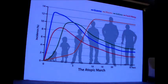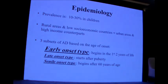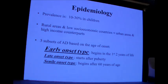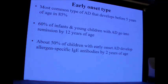This is an illustration of the atopic march. Atopic dermatitis is prevalent in 10–20% of children, usually affecting urban areas and high socioeconomic levels more than rural areas. There are three subsets of atopic dermatitis based on age of onset: the early onset type which begins during the first two years of life, the late onset type which starts after puberty, and the senile onset type which develops after 60 years of age.